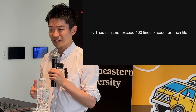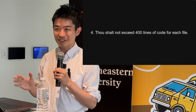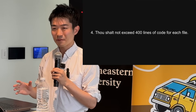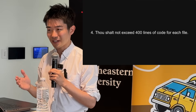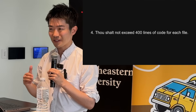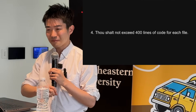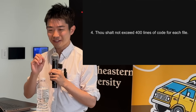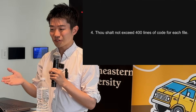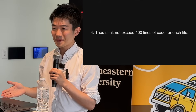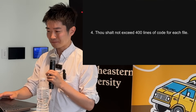Number four: you don't want to exceed 400 lines of code per file. This is not a hard and set rule, but I've found that when a file becomes 600, 700, or sometimes a thousand lines, it becomes harder for AI to manage, read, and edit it. This is a good rule of thumb for humans anyway, so why not keep it?